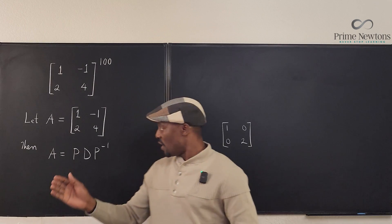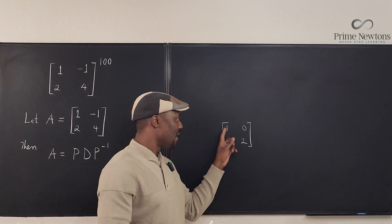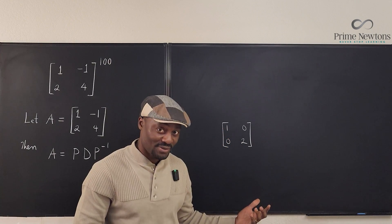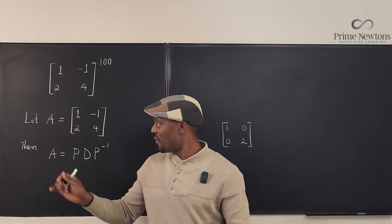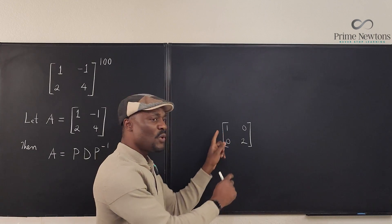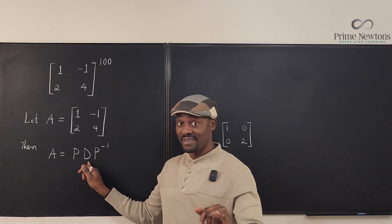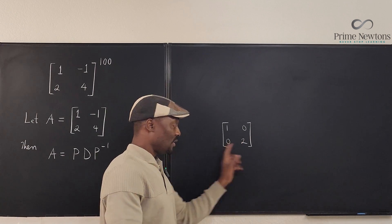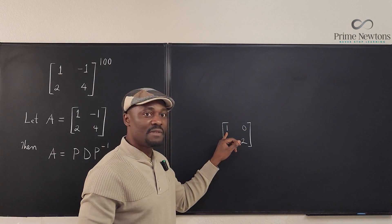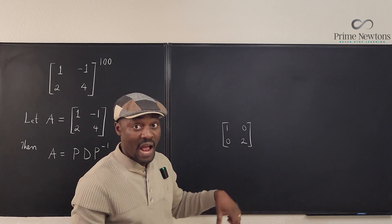You might ask: how do I get the numbers in D? Well, these numbers are the eigenvalues from your computation — the eigenvalues of matrix A are what you put on the diagonal. As for which one comes first, it doesn't matter because D is not unique; you can switch them. The only rule is: whatever eigenvalue you place in a column position, the column of P must correspond to the eigenvector for that eigenvalue.